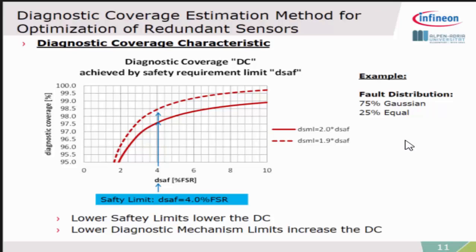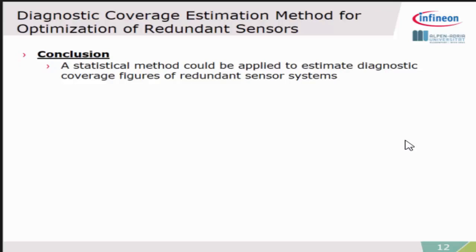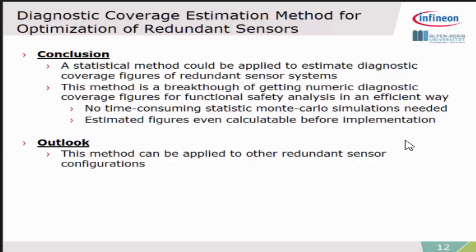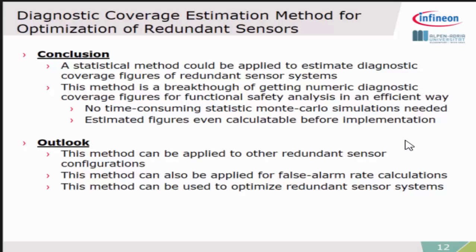To conclude, this is a statistical method which was applied to estimate these diagnostic coverage figures of redundant systems. This is, for us, a breakthrough in getting numeric diagnostic coverage values without any time-consuming simulations or fault injections, and we can estimate the figures even before the implementation of the full sensor system. As an outlook, this method can be applied to other redundant sensor configurations. This was one special case which we need to develop. You can also apply this for false alarm rate calculations when we take the blue areas from before. This is one method we can also use to optimize redundant sensor systems, which will be the work of my next year.